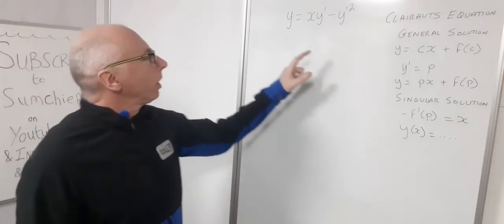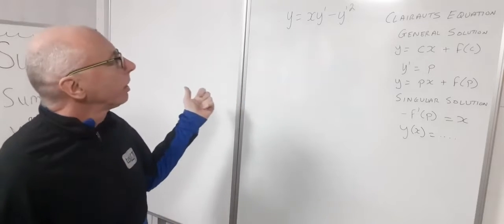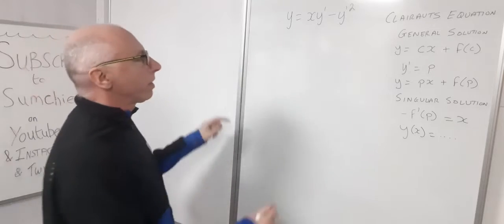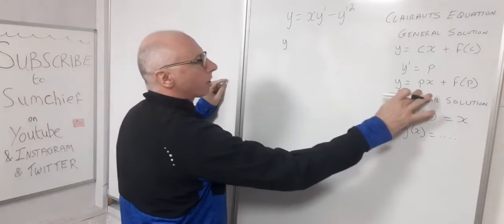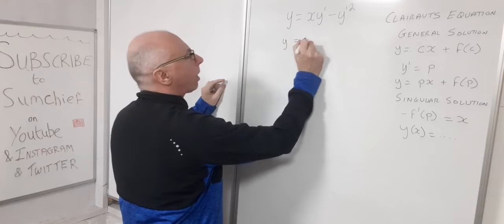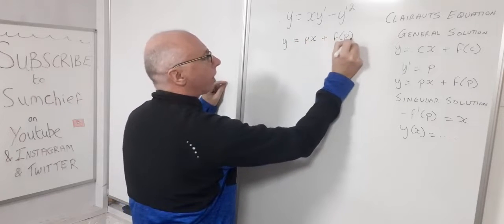Okay so with that in mind let's use our building blocks and see if we can find the solution for this. So here we have using this in terms of p we have y equals px plus f of p.